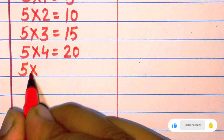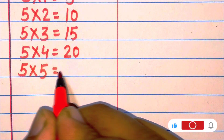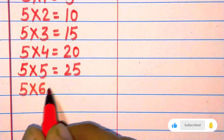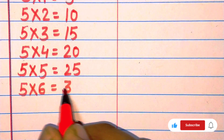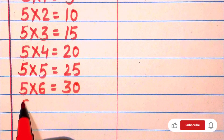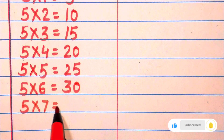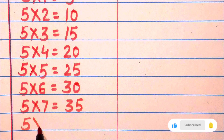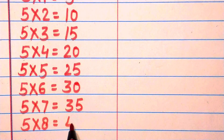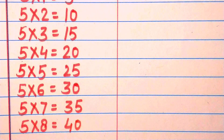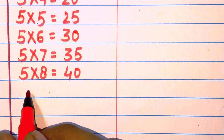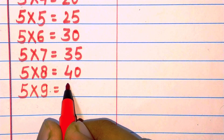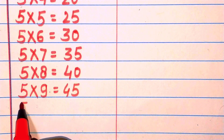Five six are thirty, five seven are thirty-five, five eight are forty, five nine are forty-five, five ten are fifty.